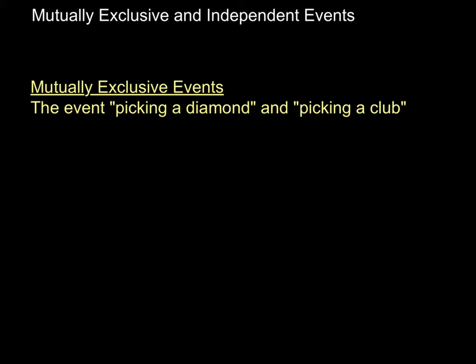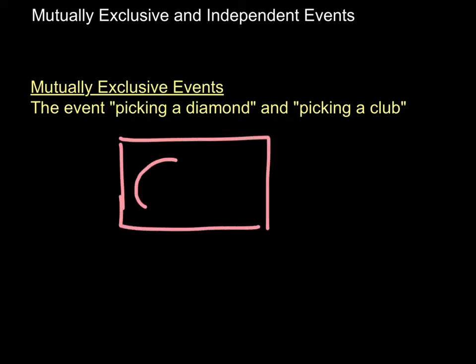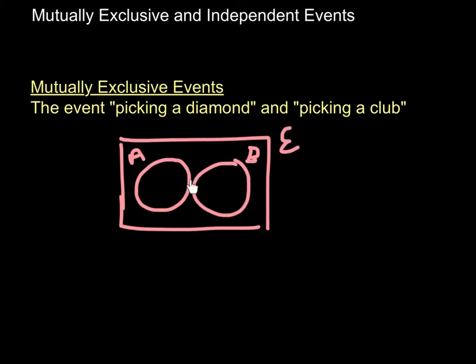Mutually Exclusive events are basically ones that have no intersection — they have nothing in common. So the event of picking a diamond and picking a club in a pack of playing cards would be Mutually Exclusive events because there's no one card that's both a diamond and a club. If we draw this as an event diagram, event A is picking a diamond and event B is picking a club, and there would be no intersection between the two — just two separate circles or sets.